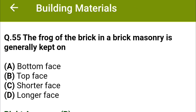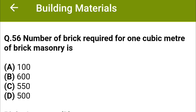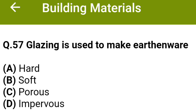The frog of the brick in brick masonry is generally kept on: option A bottom face, option B top face, option C shorter face, option D longer face. The correct answer is option B: top face. Number of bricks required for one cubic meter of brick masonry is: option A 100, option B 600, option C 550, option D 500. The correct answer is option D: 500.